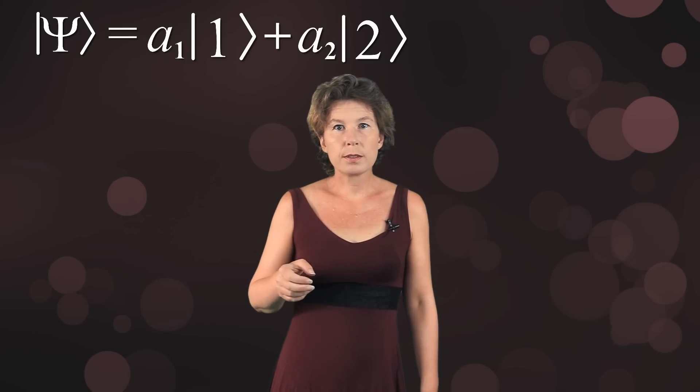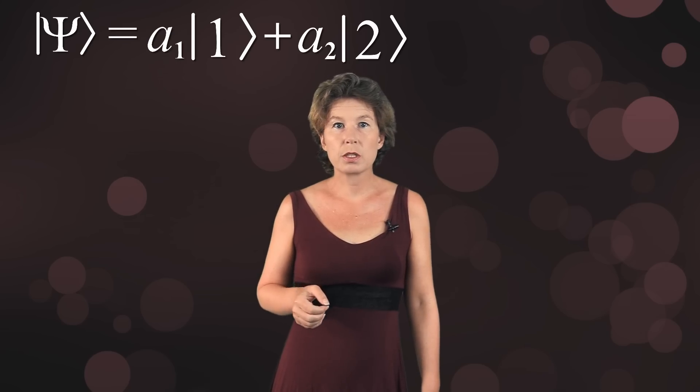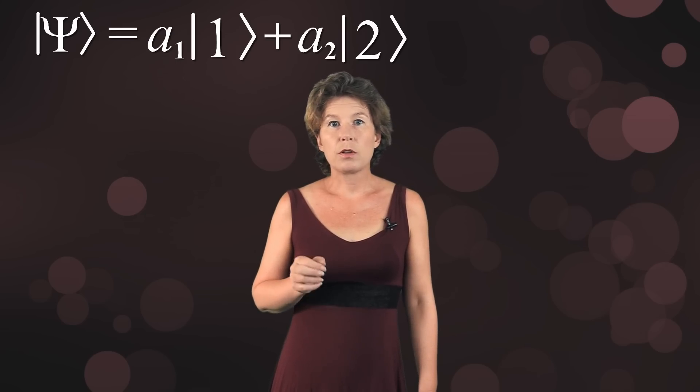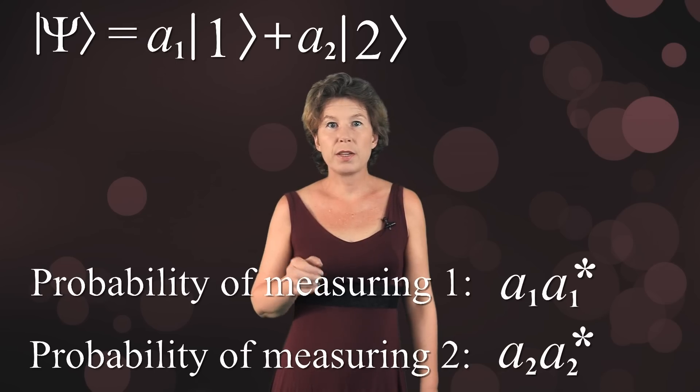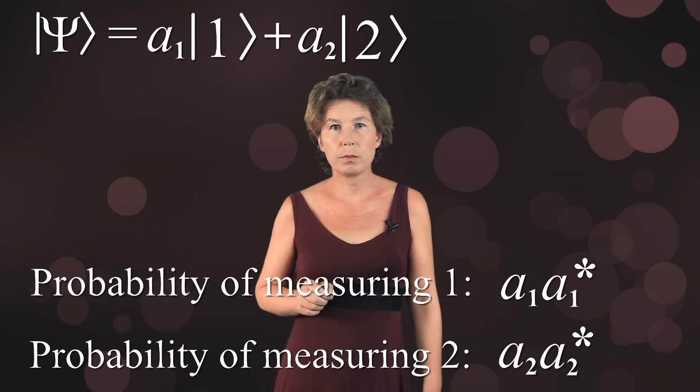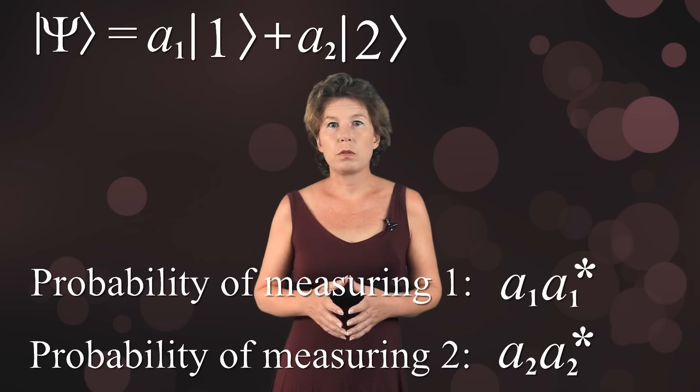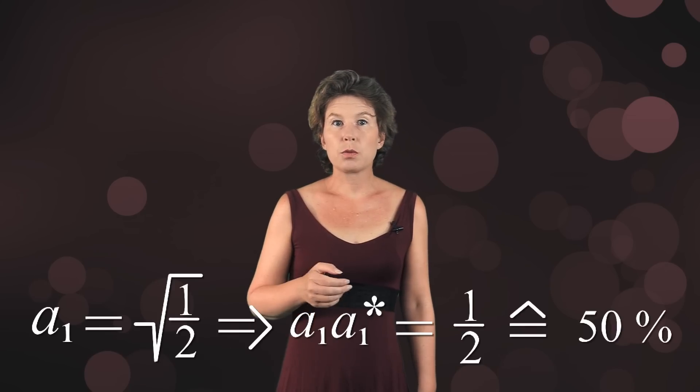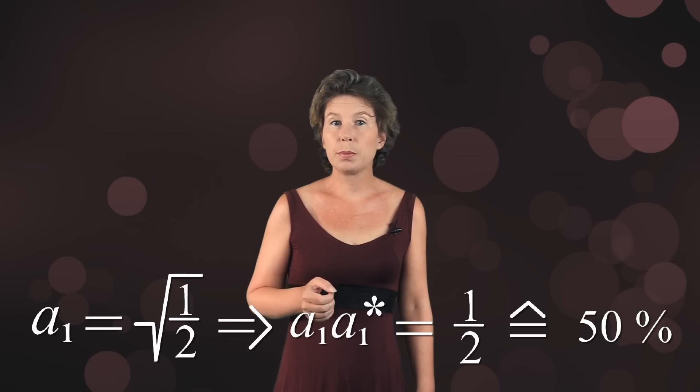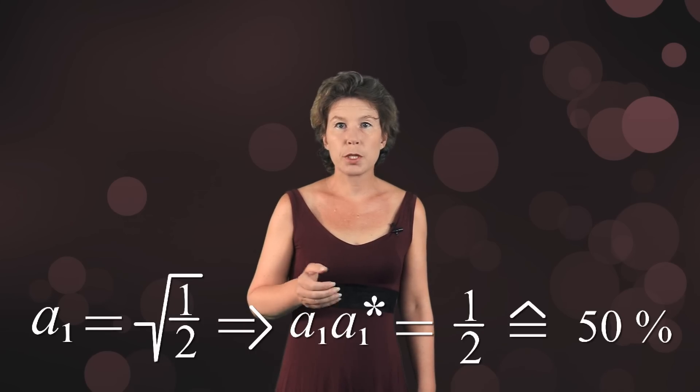Once you have expanded the wavefunction in a basis belonging to the measurement outcomes, then the square of the coefficients for a basis vector gives you the probability of getting the measurement outcome. This is Born's rule. So if a coefficient was one over square root of two, then the square is one half, which means a fifty percent probability of finding this measurement outcome.